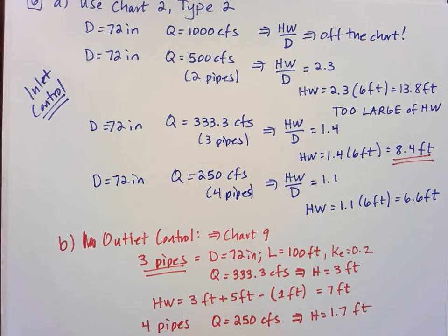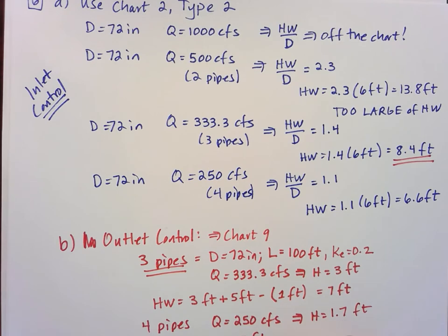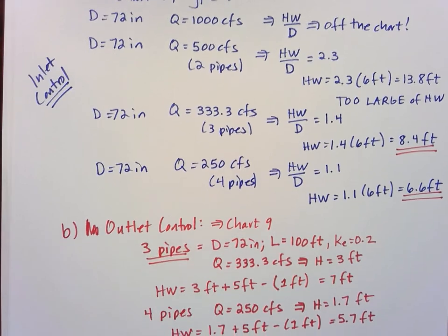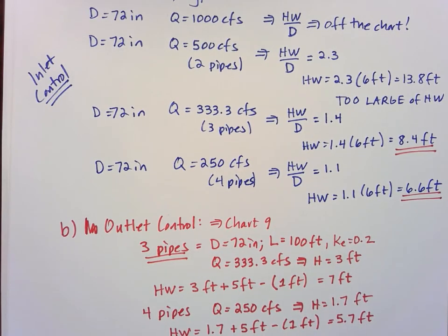And so that does significantly lower this headwater. So we have 1.7 now plus the 5 feet and then minus that one foot. And so we have 6.7 minus one. We have 5.7 feet here. So that does change the scenario with inlet versus outlet because we have a 5.7 feet here rather than 7 feet. But it's still less than the inlet because inlet control is 6.6 versus 5.7. So either way you slice it, inlet control is what's going to rule the day there. But I wanted to show that solution for both 3 and 4 pipes.